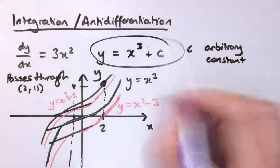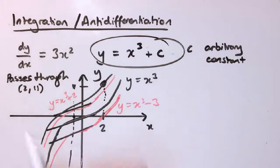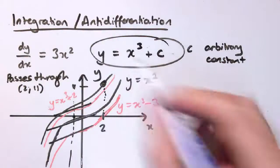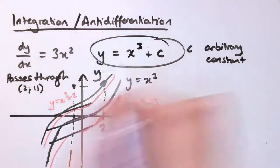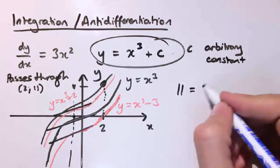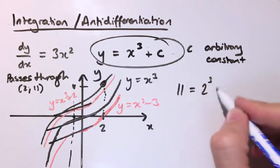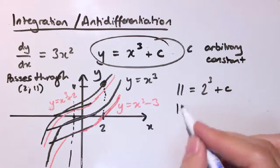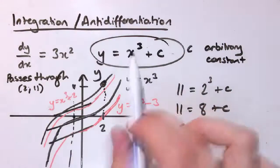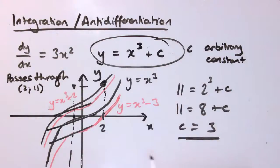So this is a family of curves, all who have the same derivative, but now I know it passes through (2,11), I can say, well, if it's y=x³+c, and it goes through (2,11), let's put in y=11, and x=2, so 11 = 2³+c, so that's 11 = 8+c, so c=3. So given this information as well, we can say that the curve that we're looking for is y=x³+3.